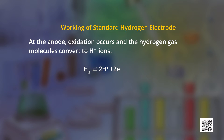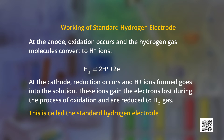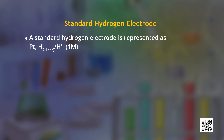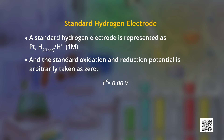A standard hydrogen electrode is chosen as a reference electrode as it is very special in its working — it can act both as anode and cathode. At the anode, oxidation occurs and the hydrogen gas molecules convert to hydrogen ions. At the cathode, reduction occurs and hydrogen ions gain the electrons lost during the process of oxidation. It is because of this reason that standard hydrogen electrode is called a reversible electrode, as it can act as an anode as well as a cathode. A standard hydrogen electrode is represented as: Pt | H₂(g, 1 bar) | H⁺(1 M), and the standard oxidation and reduction potential is arbitrarily taken as 0.